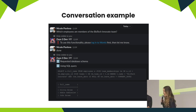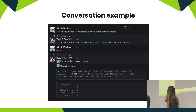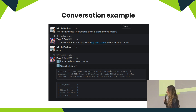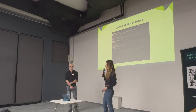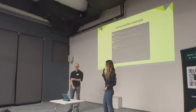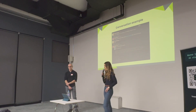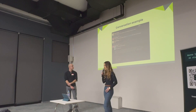Here's an example: I asked XIO which employees are members of a specific team. It asks me to log in to Work6 because I need to be authorized to see this data. After I click the link and authorization is done, the model asks for the database schema, generates the query — which you can see on screen — and at the bottom of the screenshot you can see the response returned from the query.